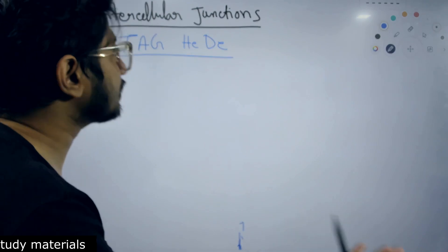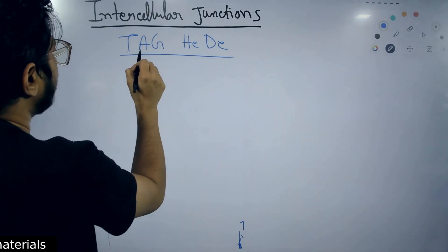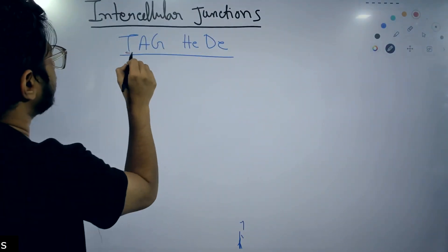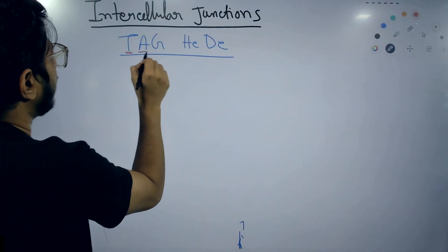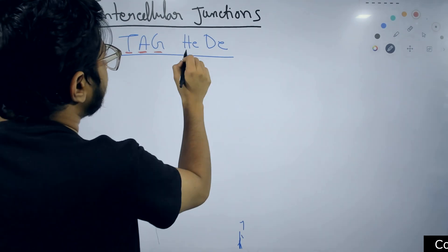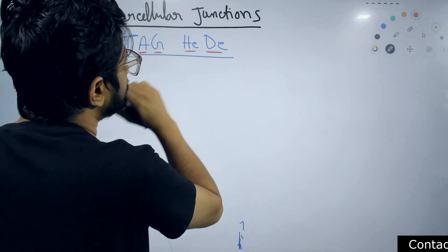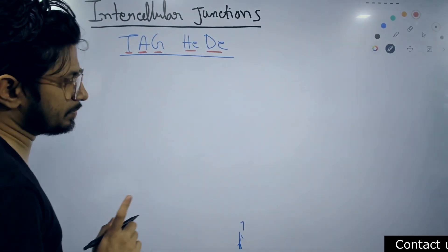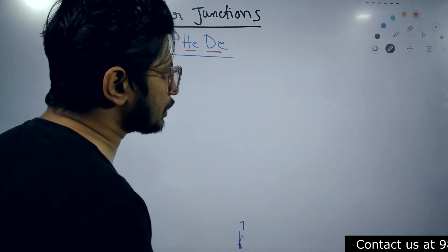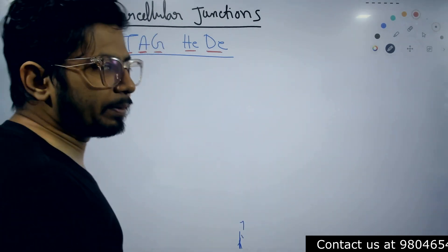All the types of junctions will be listed: T for tight junction, A for adherence junctions, G for gap junctions, HE for hemi-desmosomes, and D for desmosomes. These are the five major intercellular junctions listed using TAG HEADY.